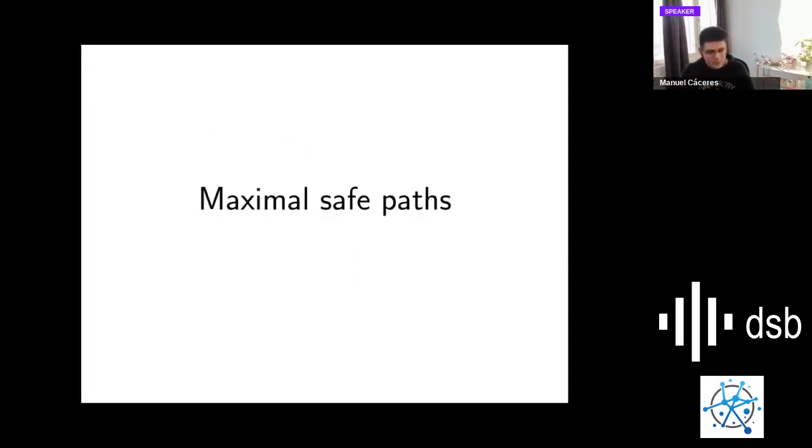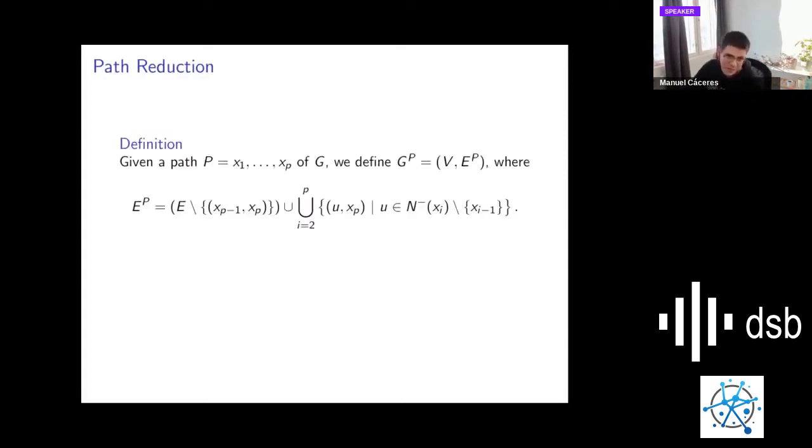For maximal safe paths, we could try to do the same, at least in the idea. But now it's not as simple as removing the whole path, because if you remove the whole path, you are not allowing to use sub-paths of these paths as part of the solution. So instead, we have to do a little more work. We define something that we call the reduction graph of G with respect to the path that we are testing to be safe. This is just the same vertices. For the edges, we remove the last edge and we add these edges that we call transitive edges.